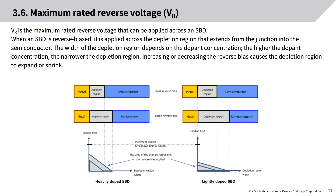VR is the maximum rated reverse voltage that can be applied across an SBD. When an SBD is reverse biased, the voltage is applied across the depletion region that extends from the junction into the semiconductor. The width of the depletion region depends on dopant concentration — the higher the concentration, the narrower the depletion region. Increasing or decreasing the reverse bias causes the depletion region to expand or shrink.